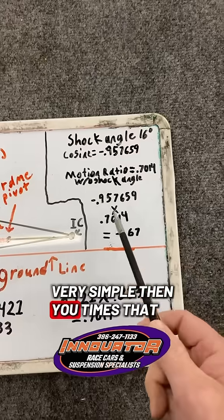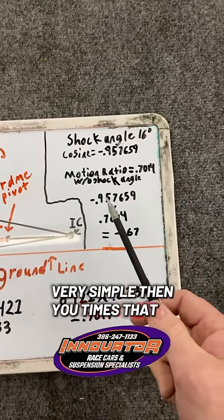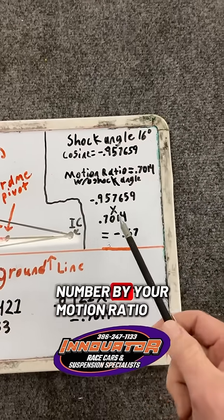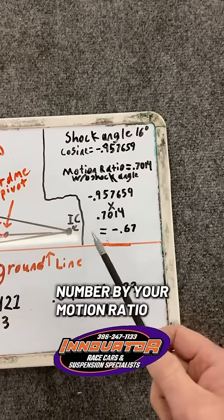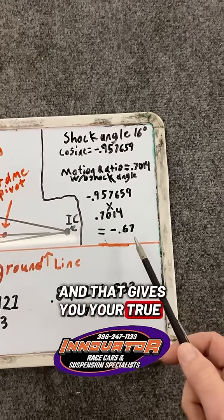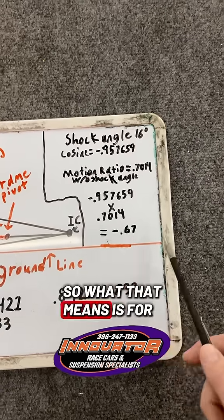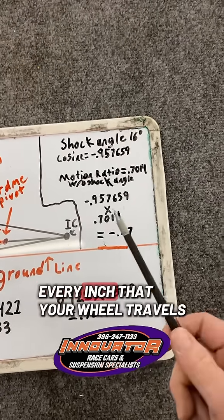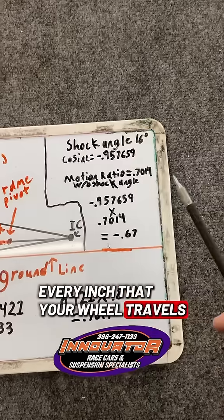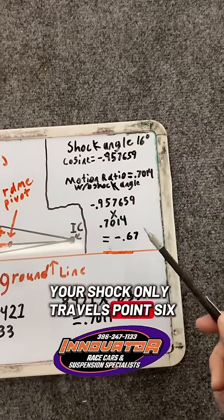Then you times that number by your motion ratio and that gives you your true motion ratio. So what that means is for every inch that your wheel travels, your shock only travels 0.67.